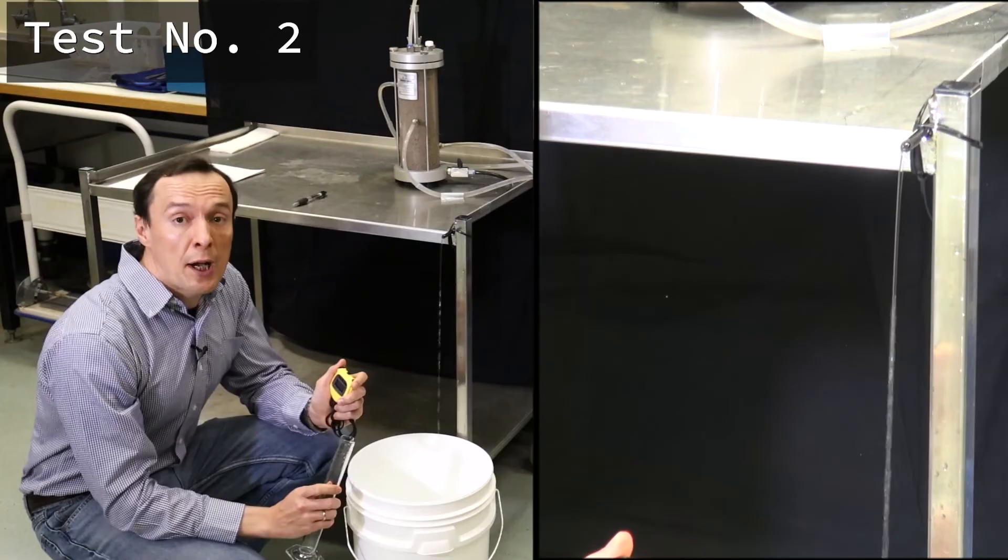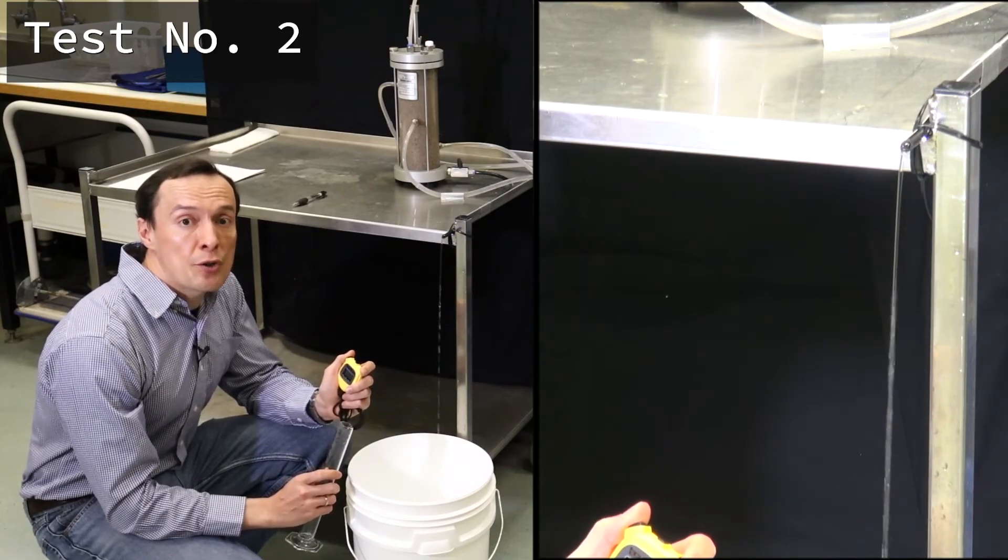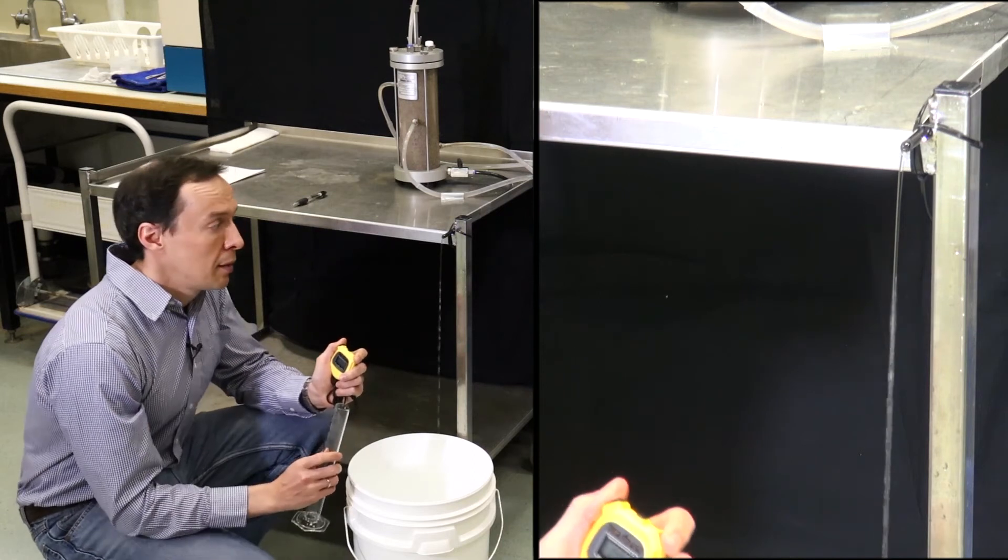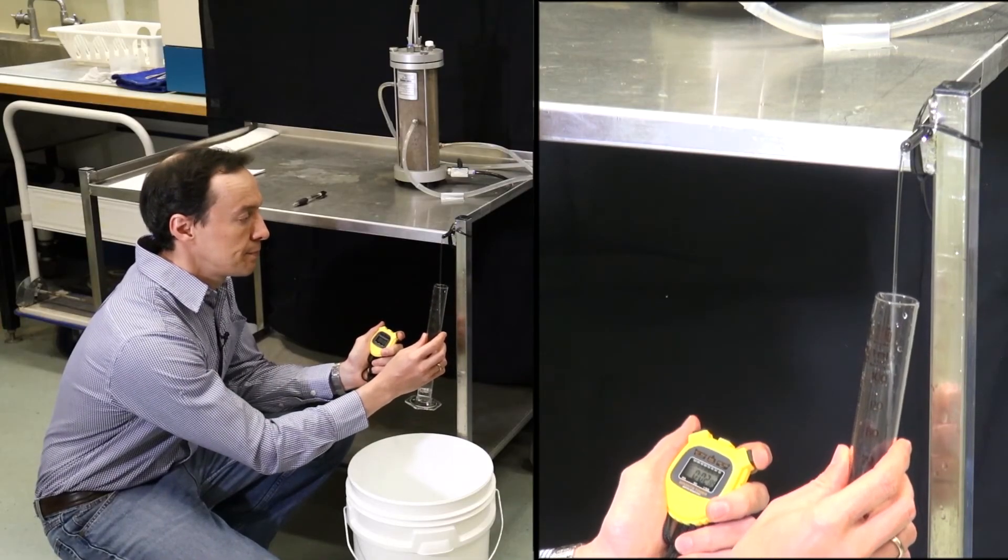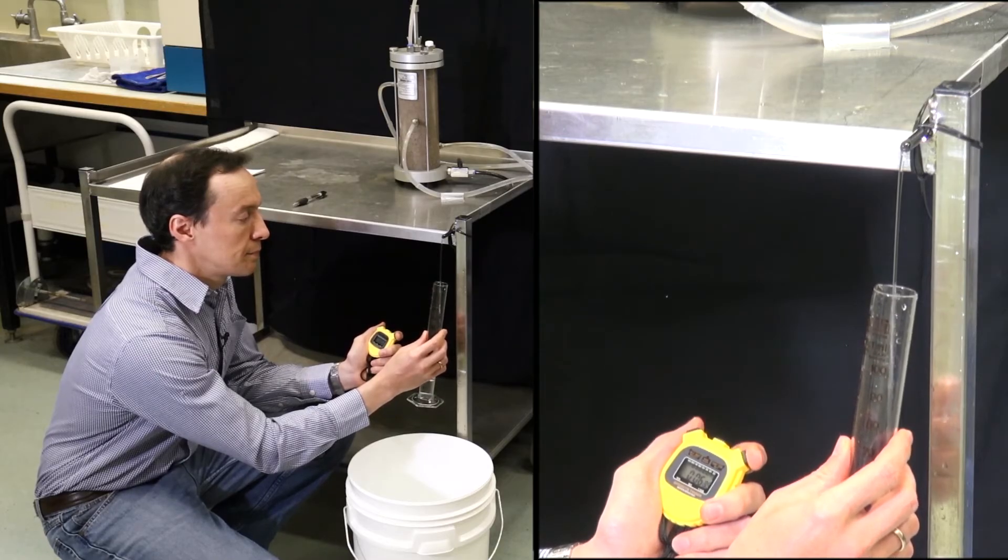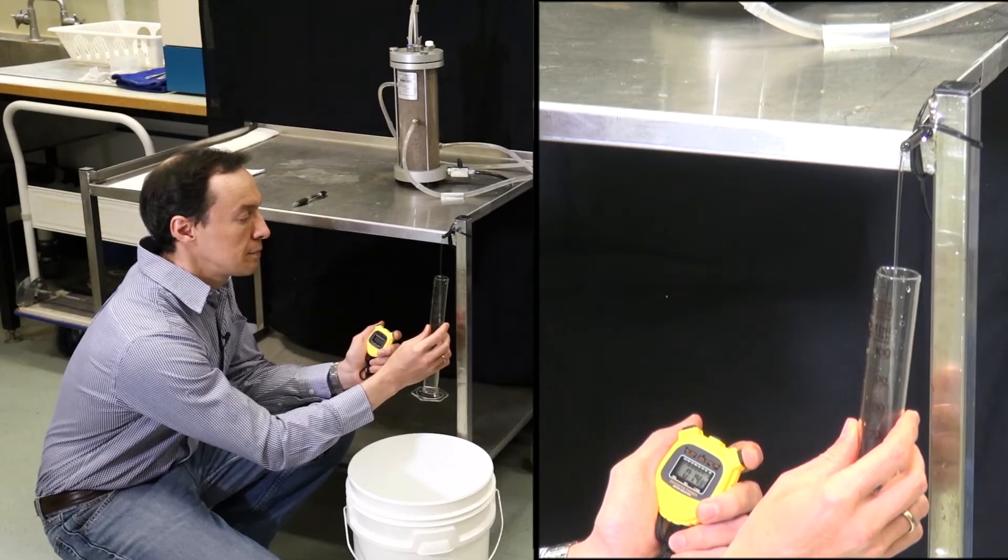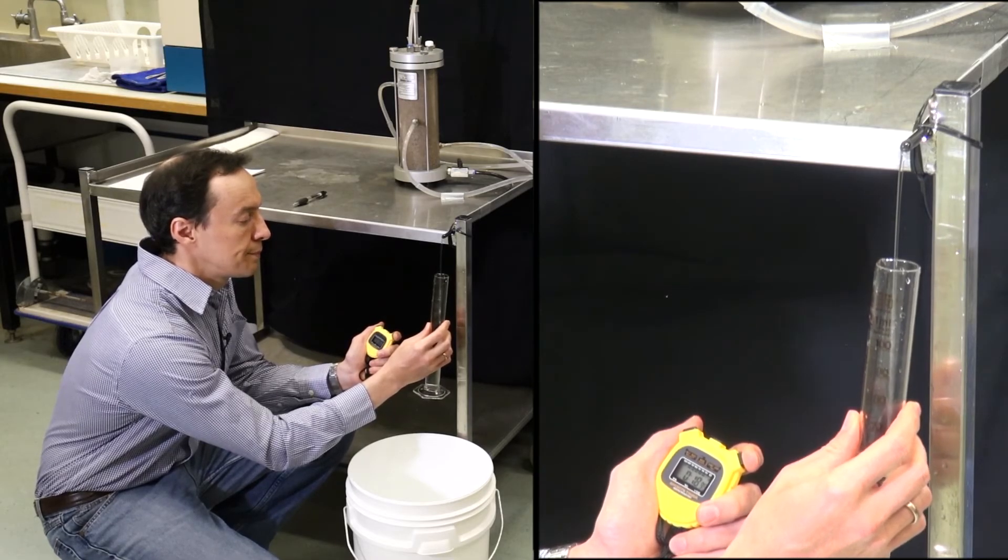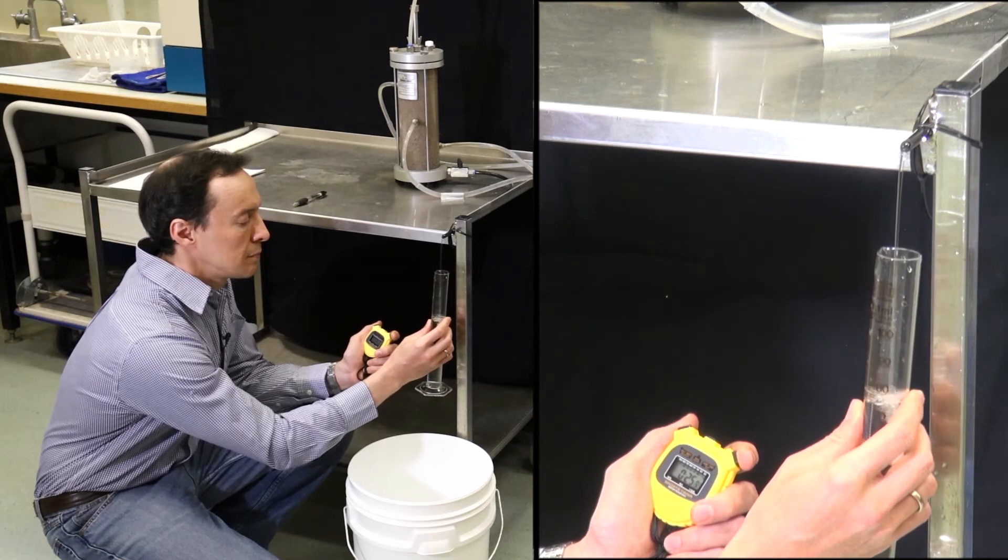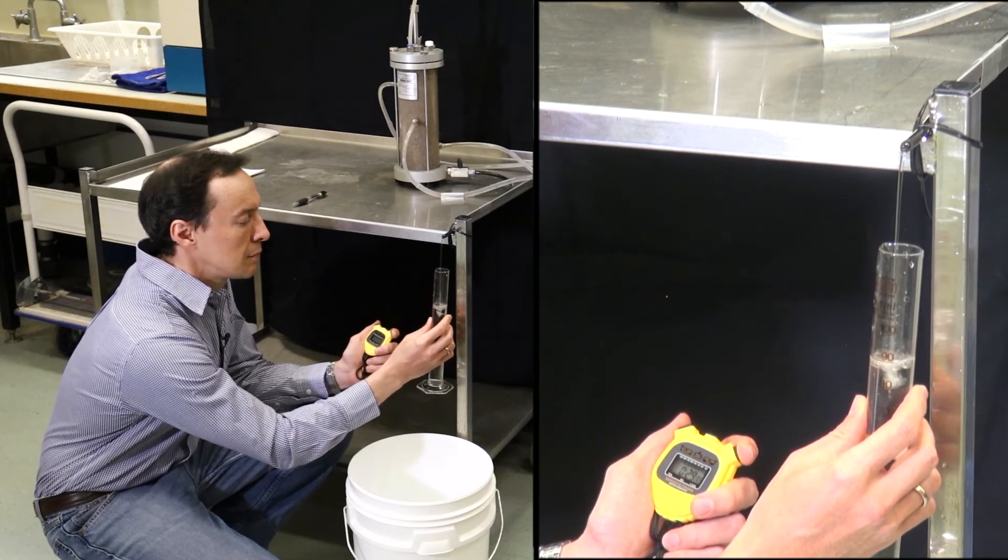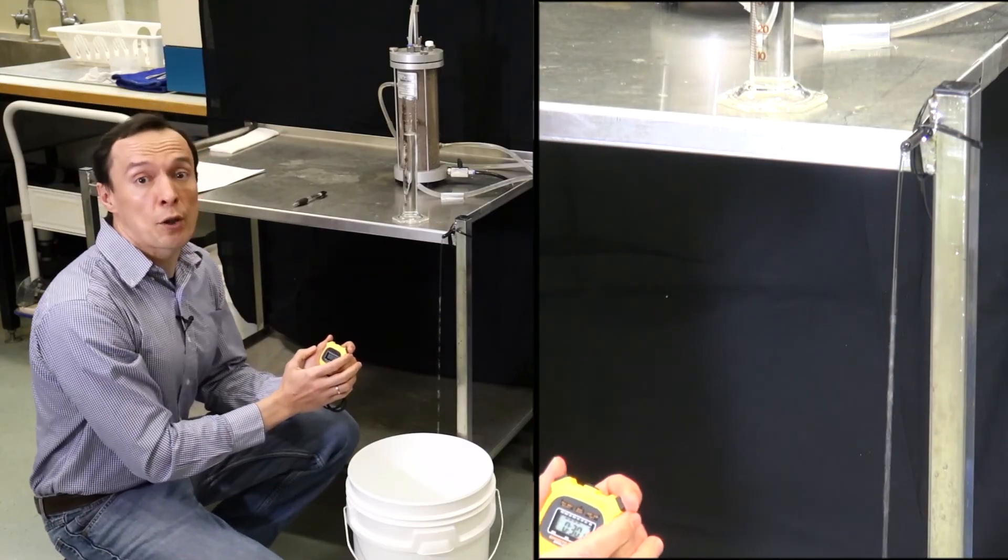We need to repeat this test at least five times with different water flow. This is going to be our second test. We increase the water flow. When we change the water flow we also change the level of water in the manometers. Now we start collecting water and timing it.